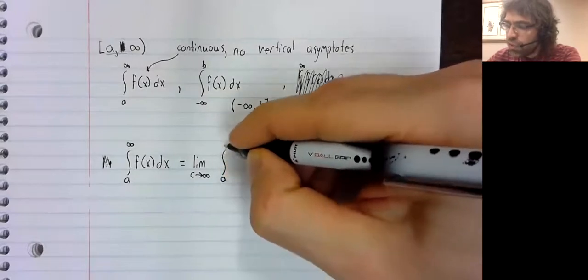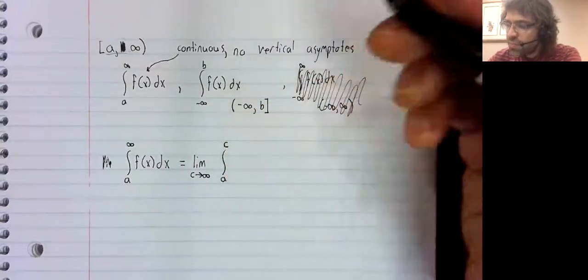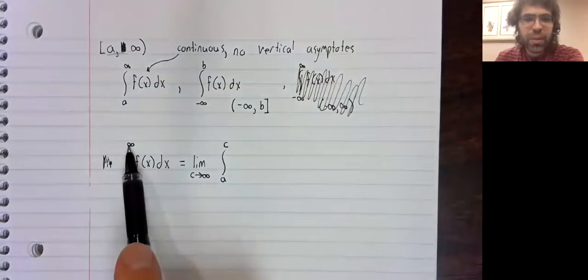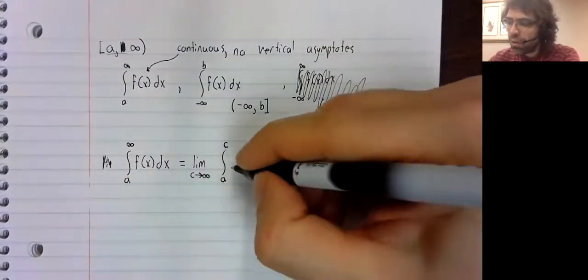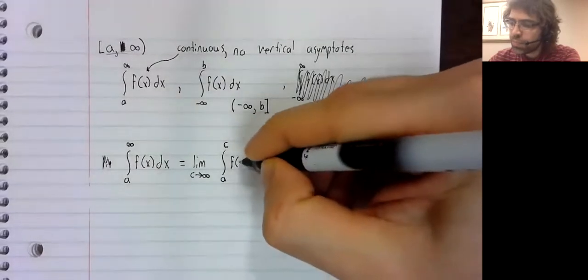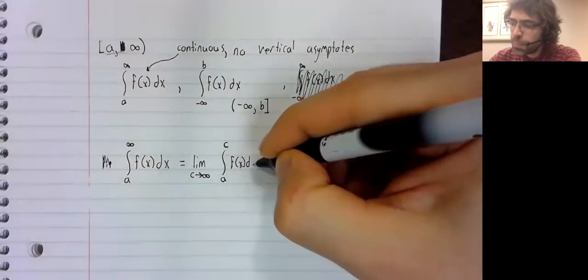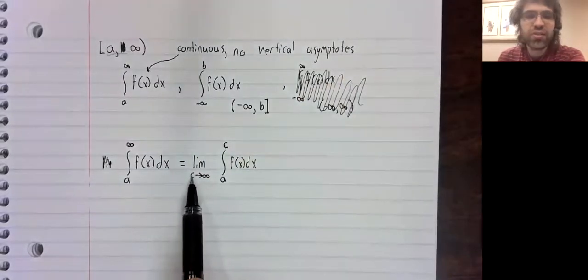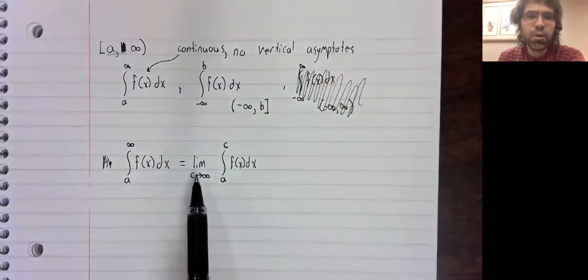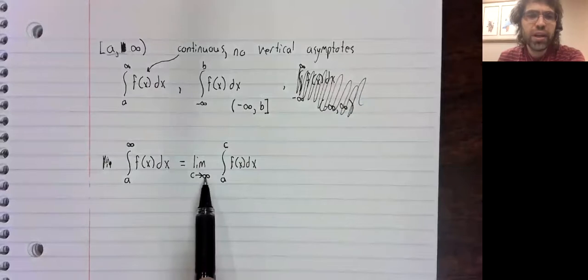We replace our infinite limit with a finite number, and then we take a limit as that finite number goes to infinity.